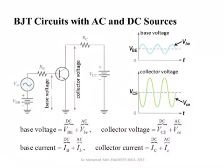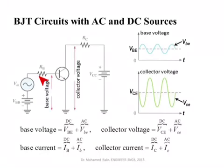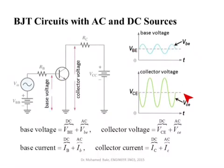One of the most important applications of bipolar junction transistors is to use them as amplifiers. After biasing the circuit, we add small AC changes to the base voltage. This small change in the base voltage results in a small change in the base current, which is amplified by beta DC, resulting in a much bigger change in the collector voltage. The operating point has VBE equal to 0.7V and VC at the operating point.